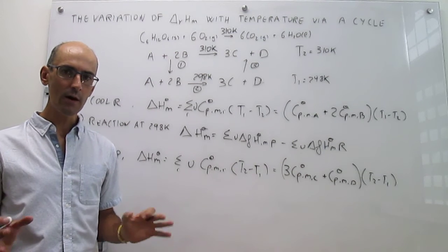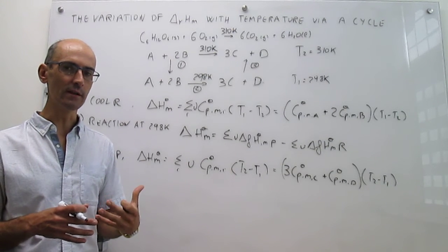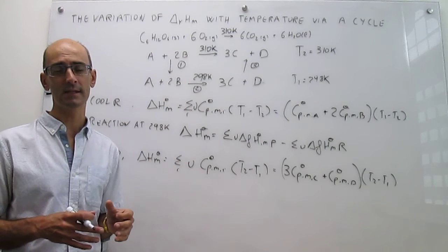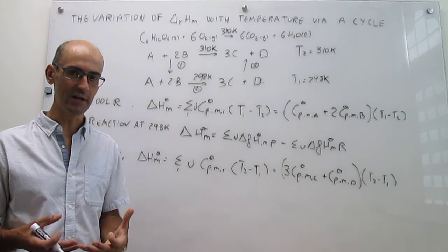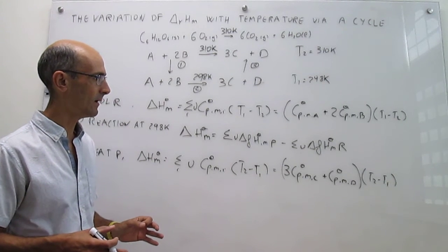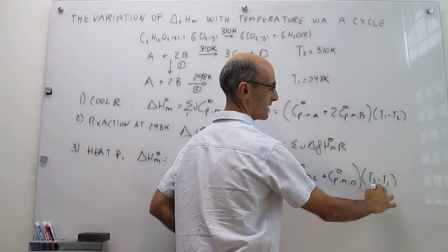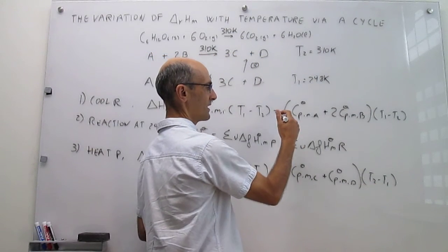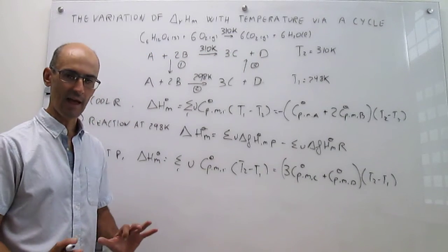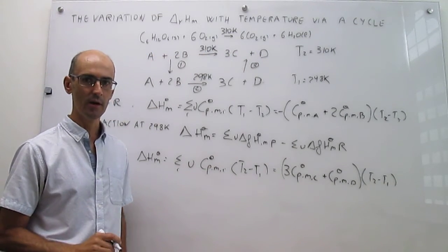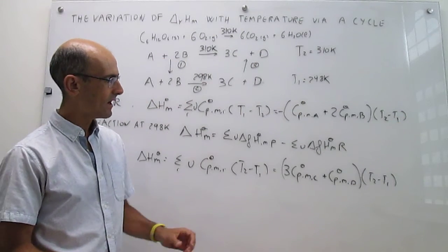What I'm going to do now is reformulate this a little bit, so that you can see that this is exactly the same as Kirchhoff's Law, which we're going to see in the next video. Notice that the parenthesis in step one — T1 minus T2 — is the same as that in step three but with reversed sign. So I can simply change the sign and make step one also use T2 minus T1, without changing the final numerical result.